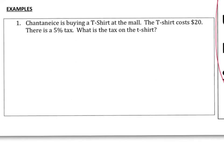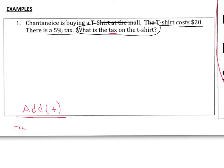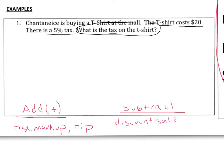Let's zoom in on this question. Shantanise is buying a t-shirt at the mall. The t-shirt costs $20 and there's a 5% tax. What is the tax on the t-shirt? Let's clarify what some different words mean. Words like tax, markup, and tip mean that we should add money — the price is going to become larger. Words like discount, sale, or coupon mean we should subtract — the price gets smaller.